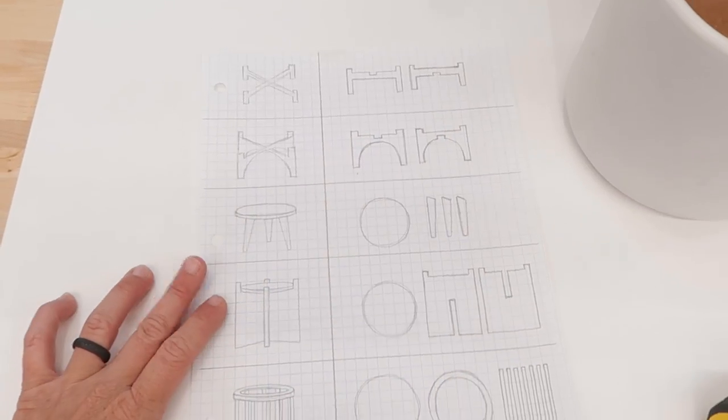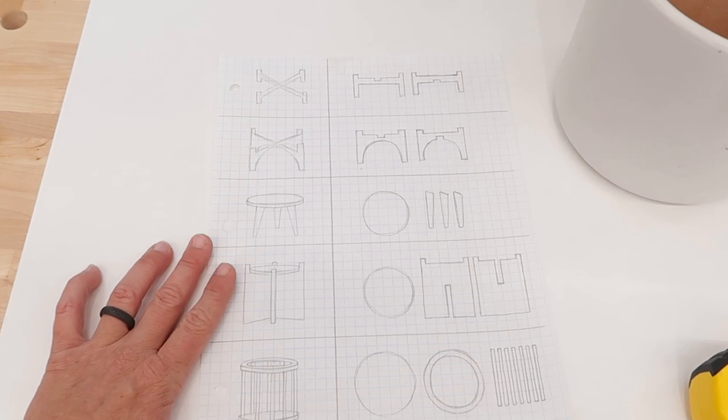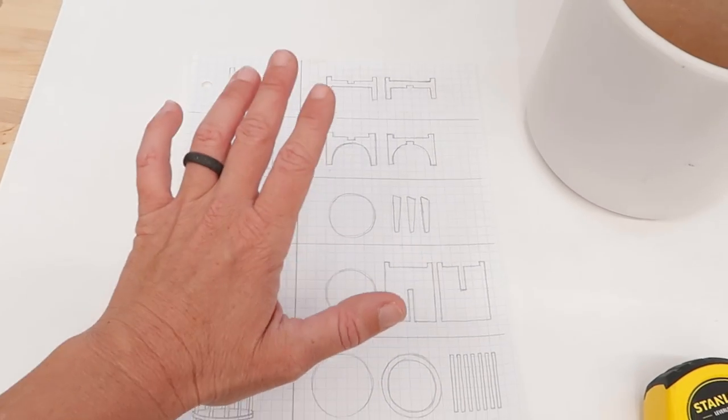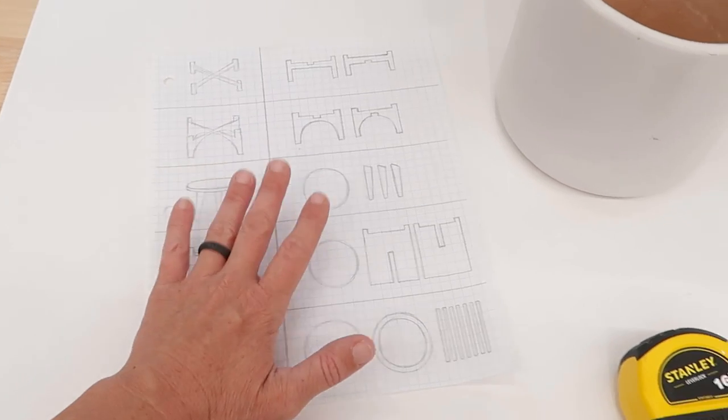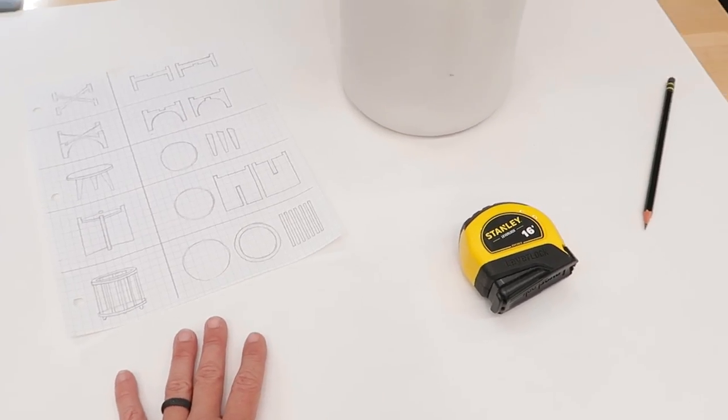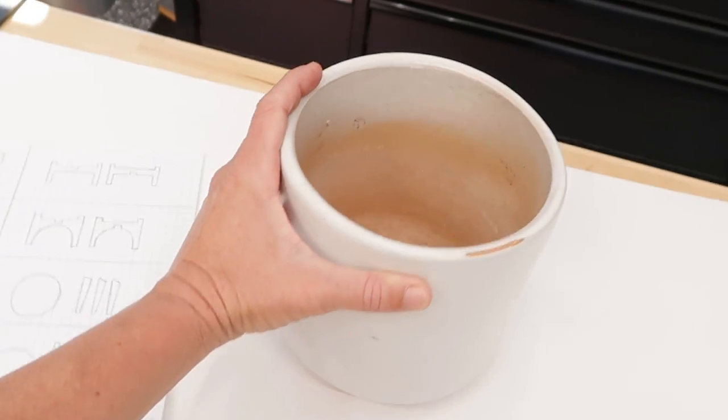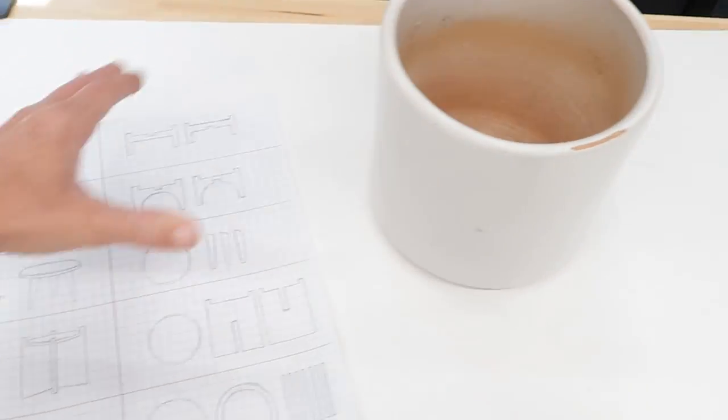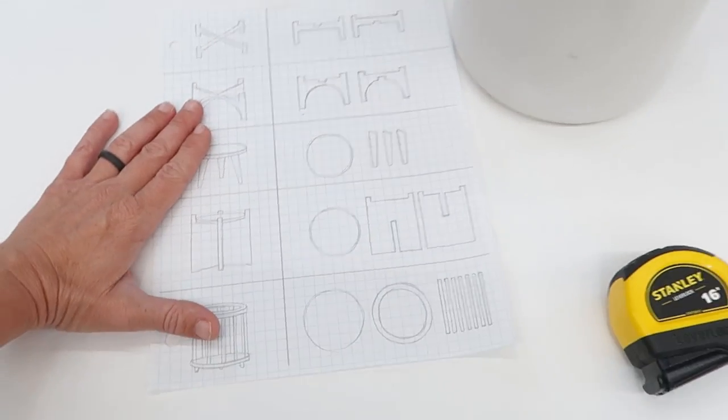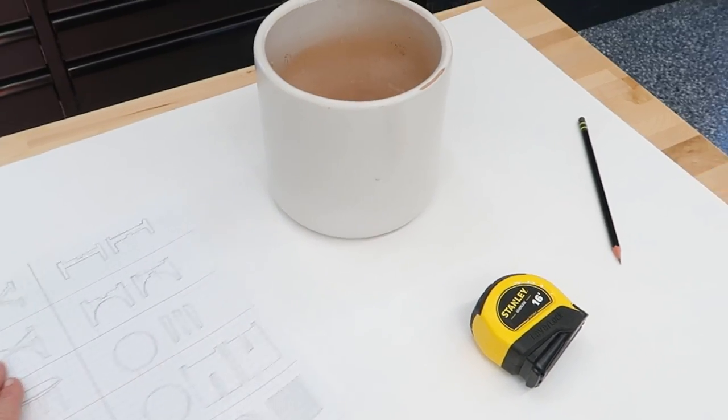I've sketched out my five different planter stand designs and given myself a general idea of what the templates are going to look like to assemble these into planter stands. I'm going to draw them into a larger scale on this poster board and use that as my template. I need to take some measurements of this planter pot, write them down so I know what our templates are going to be sized at.